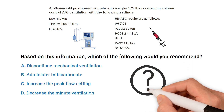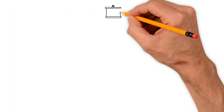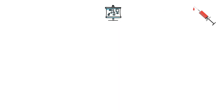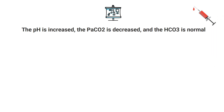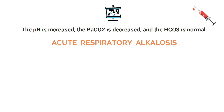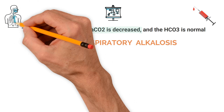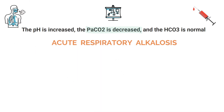Do you know the correct answer? Let's break it down. The first thing you need to do is interpret the ABG results. The pH is increased, the PaCO2 is decreased, and the bicarb is normal. This can be interpreted as acute respiratory alkalosis. Since the PaCO2 level is decreased, it means that the patient is blowing off too much CO2 — in other words, they are hyperventilating.